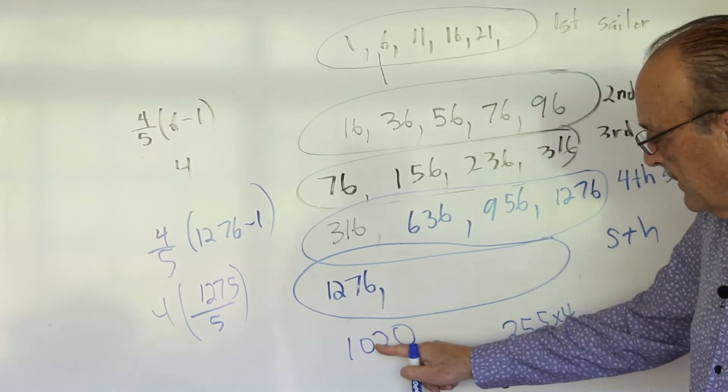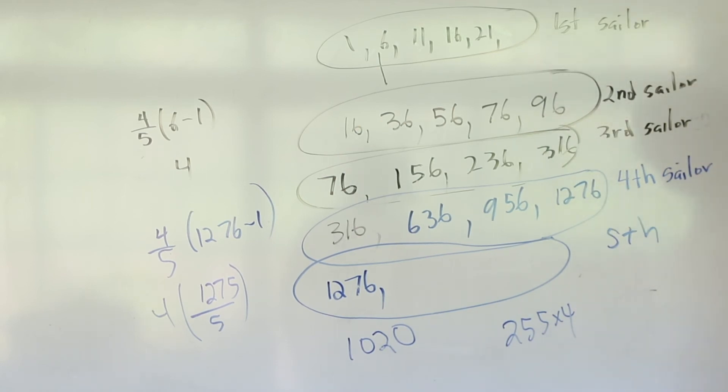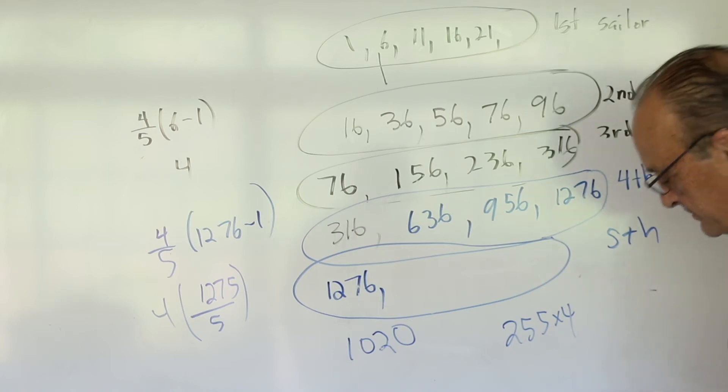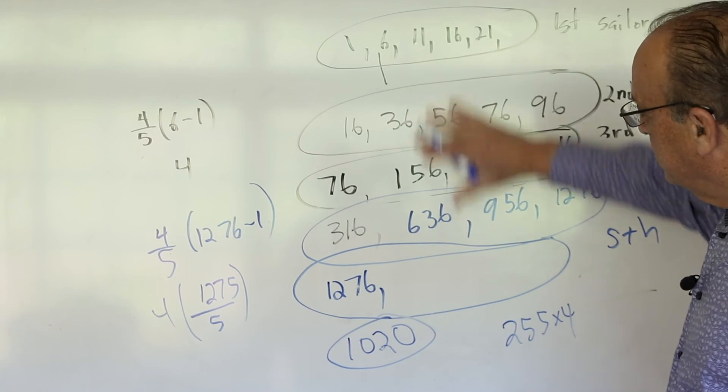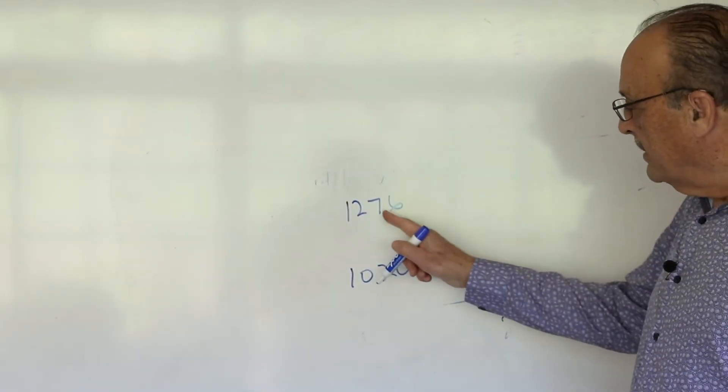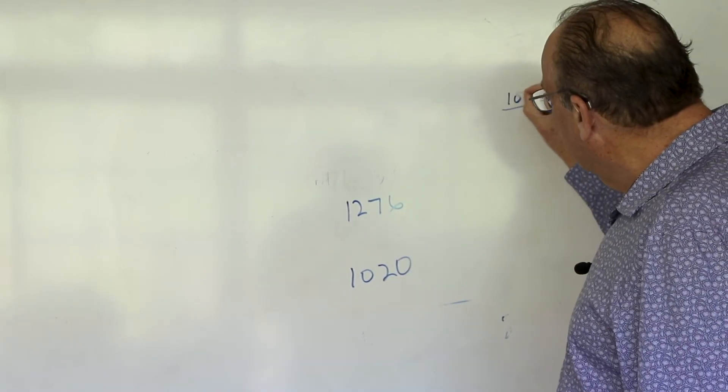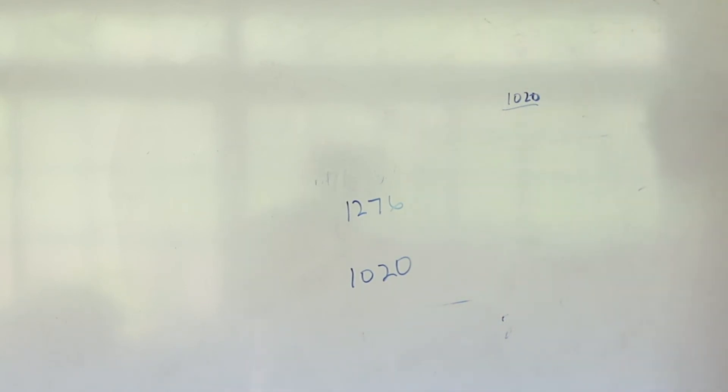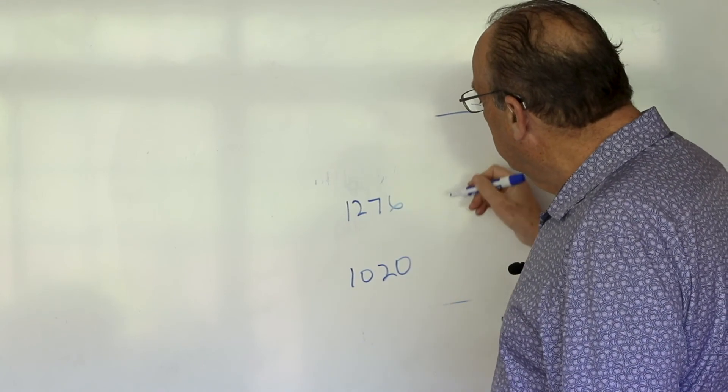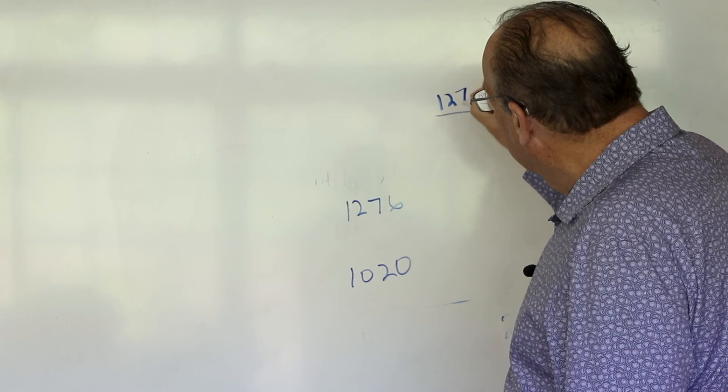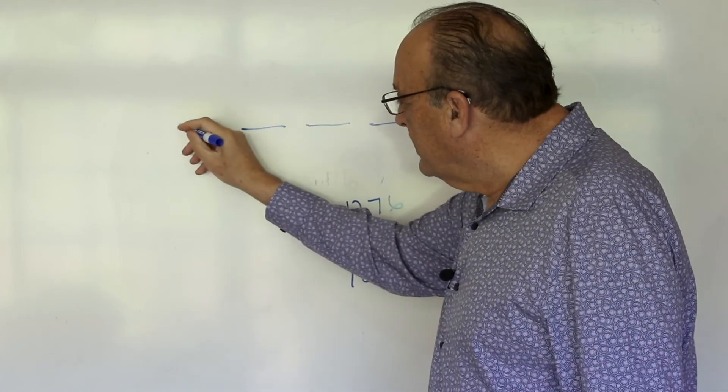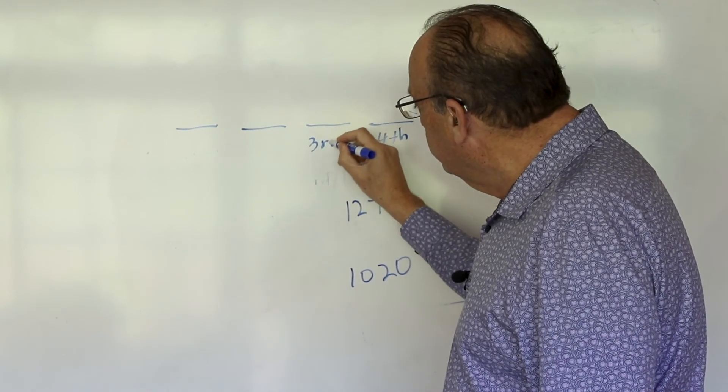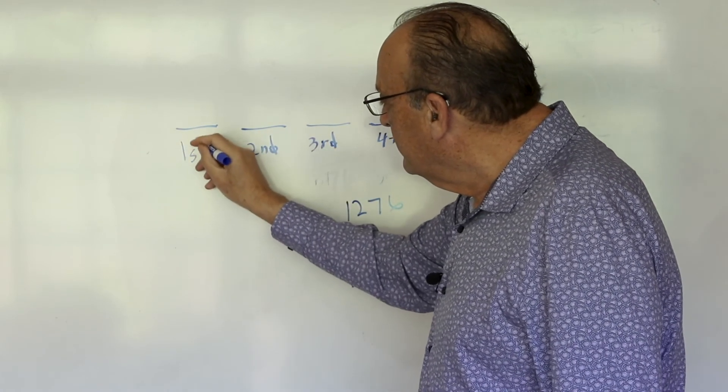So this is how many coconuts that the sailors found when they woke up in the morning. But the trouble is, this isn't what the question asked for. The question asked for how many coconuts that they started with. Okay, so we can erase everything. This is all we need. So all this can be erased. So actually, I shouldn't have erased 1276. So we have the situation where we have 1,020. That was how many coconuts that they found the morning when they woke up. The fifth sailor woke up to 1276. And then the fourth person, the third person, the second person, and the first person. We just have to do some backwards work using algebra.